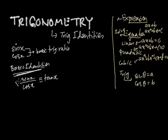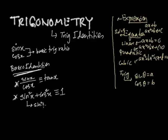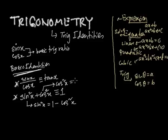The next identity is that the square of sin x and the square of cos x together, if you add them up, it is equivalent to 1. This came from various calculations; we'll take it at face value and remember it. From here, we can get two more identities: sin squared x is identical to 1 minus cos squared x, and cos squared x is identical to 1 minus sin squared x.